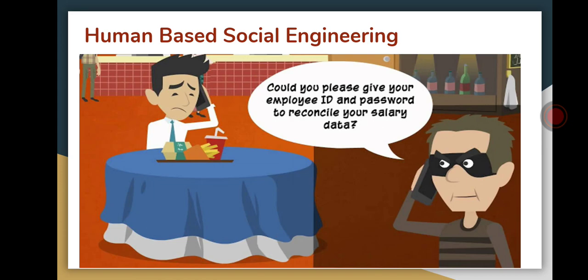Here is an example: a cyber criminal makes a call to an employee and asks, 'Could you please give your employee ID and password to reconcile your salary data?' The employee automatically gives his username and password because the attacker targets his concern about salary. They change the mind of a person by using a single trigger word like 'salary.'